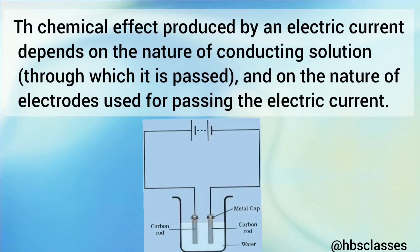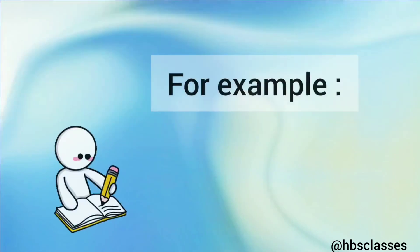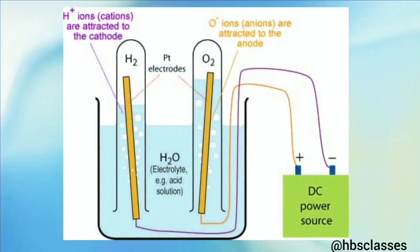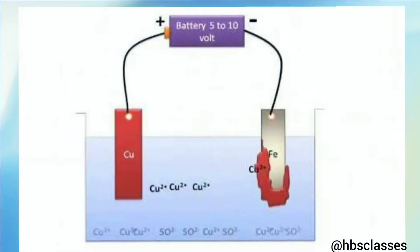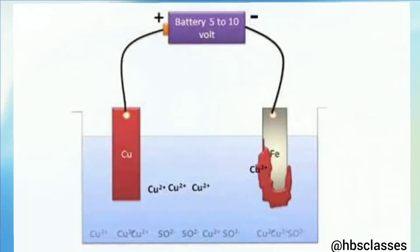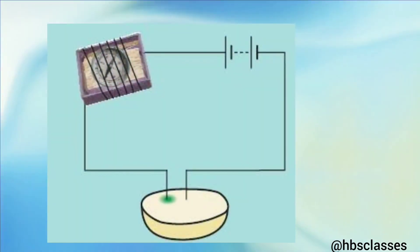The chemical effects produced by an electric current depend on the nature of the conducting solution through which it is passed and on the nature of the electrodes used. For example, bubbles of gases are formed when electric current is passed through acidified water. When electric current is passed through copper sulfate solution during electroplating, a deposit of metal is formed. A change of color occurs when electric current is passed through a cut potato or through an electrolyte.